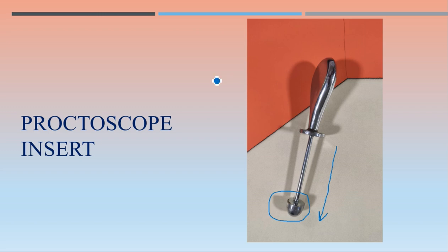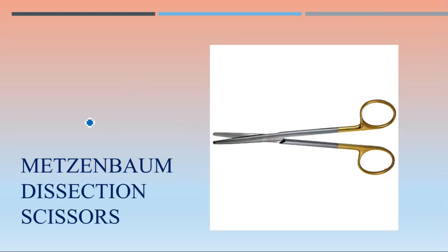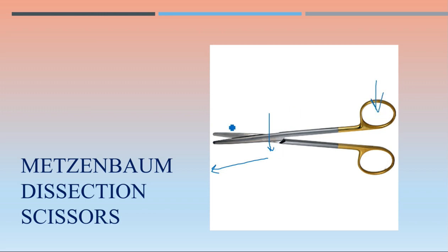The next one is Metzenbaum dissection scissors. It looks like this — the rings are there, it has straight blades, and a slender distal sharp straight tip. The joint is here, and whenever force is applied through the rings, the prong moves in the opposite direction — again type one lever. This is Metzenbaum dissection scissors.